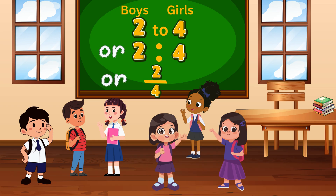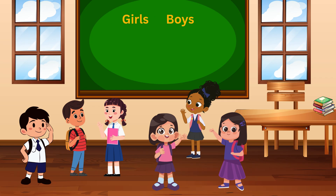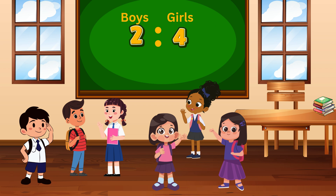The ratio of boys to girls is two to four. By the way, if you prefer, the ratio can also be given as girls to boys. To do that, you'll need to switch the order of the numbers from two to four, to four to two. So the order in which the numbers are stated is very important. For now, let's keep the ratio as boys to girls, which is two to four.